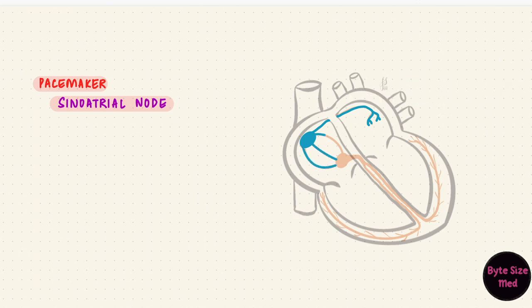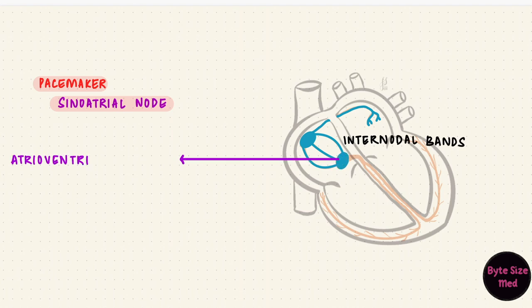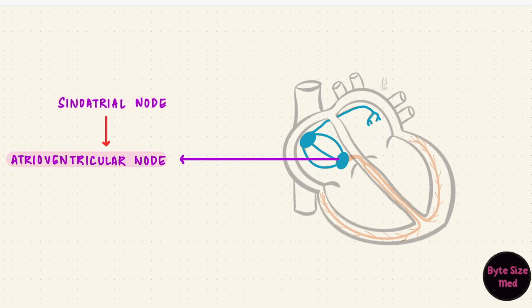There are also internodal bands which connect the sinoatrial node with the next structure — the atrioventricular node. There are three important internodal bands: anterior, middle, and posterior. The impulse then arrives at the atrioventricular node, which is located in the atrioventricular septum near the attachment of the tricuspid valve.